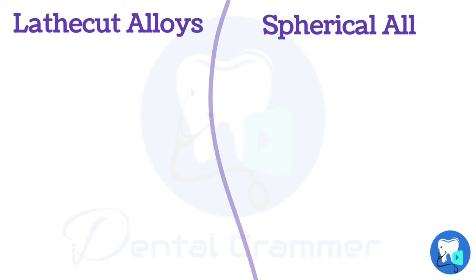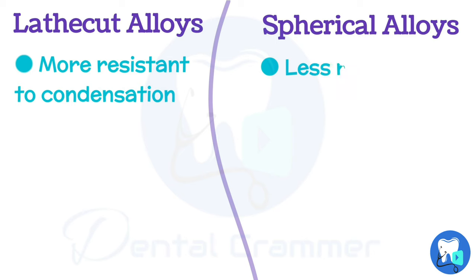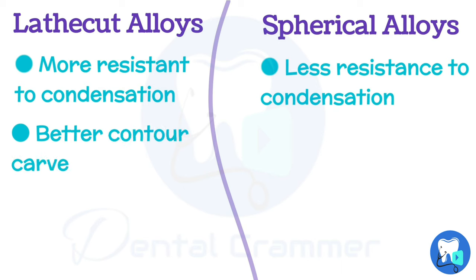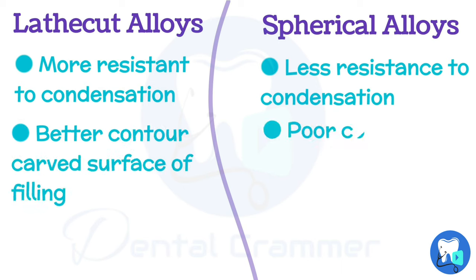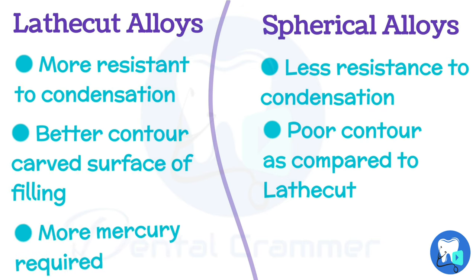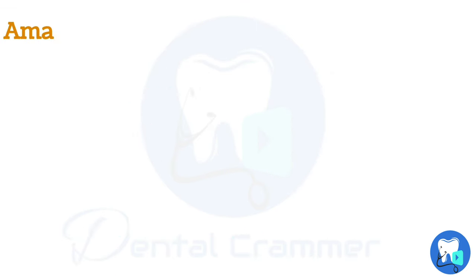Comparing lathe cut alloys with spherical alloys: lathe cut alloys are generally more resistant to condensation, which means better condensation compared to spherical alloys. Due to better condensation, lathe cut alloys have better contours and carved surfaces. The major drawback of lathe cut alloys is that they require more mercury compared to spherical. Admix alloys have the favourable properties of both lathe cut and spherical.